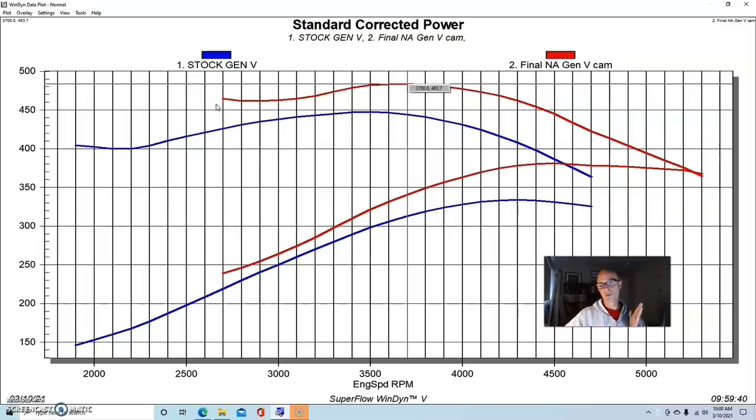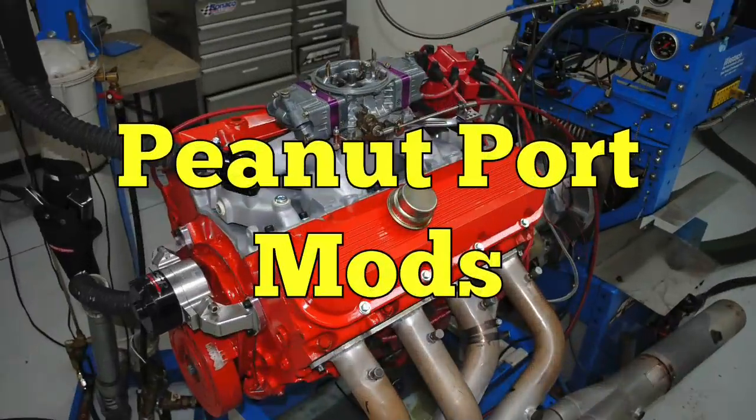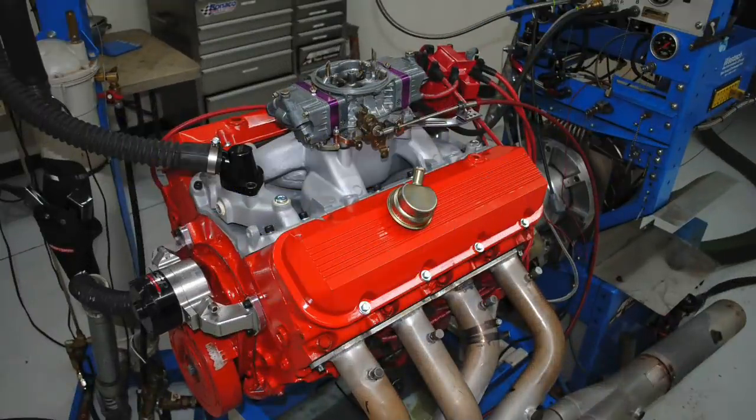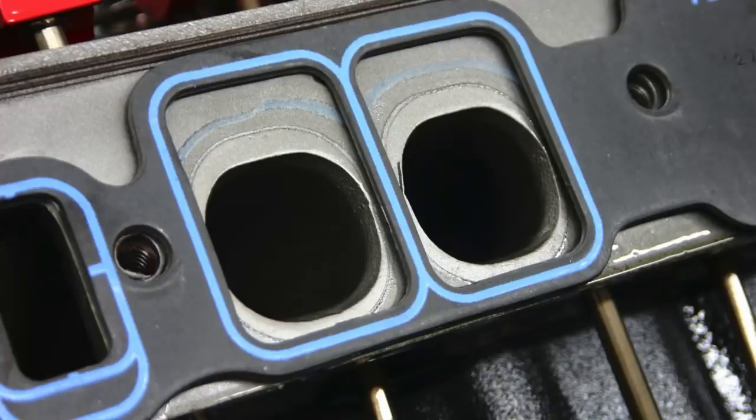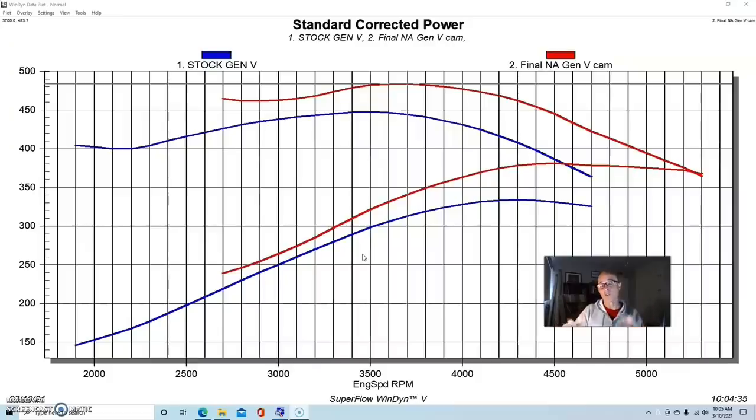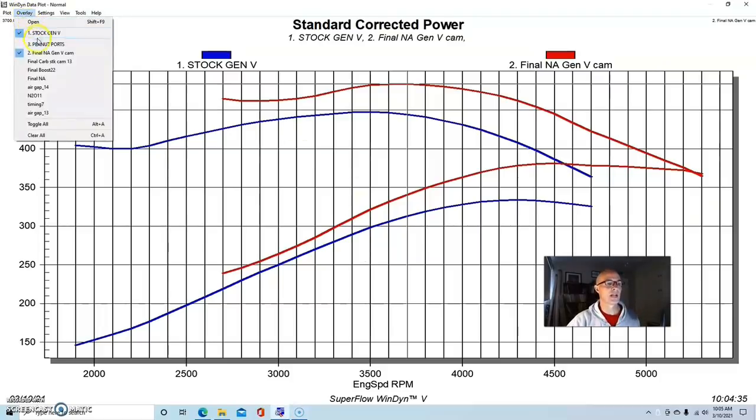Now let's take a look at what happened when we upgraded things even more, but retained the peanut port heads. After illustrating the gains from a simple minor RV cam, we took things more serious and upgraded our whole motor. We did that to illustrate what happens when you improve the power output by changing the compression. We put a little bit more camshaft in it and wanted to continue with the peanut port heads to show what the potential is.